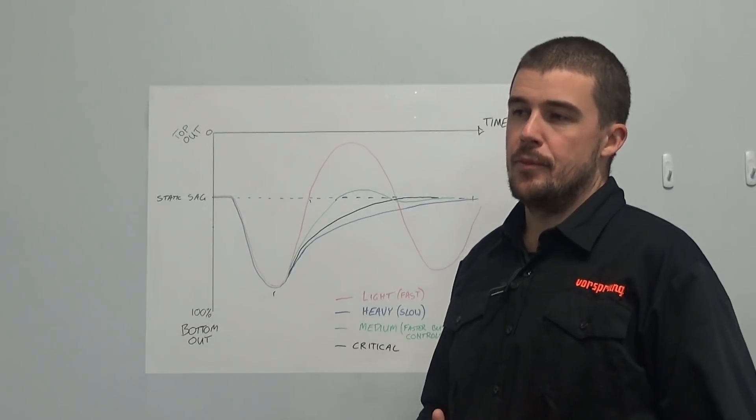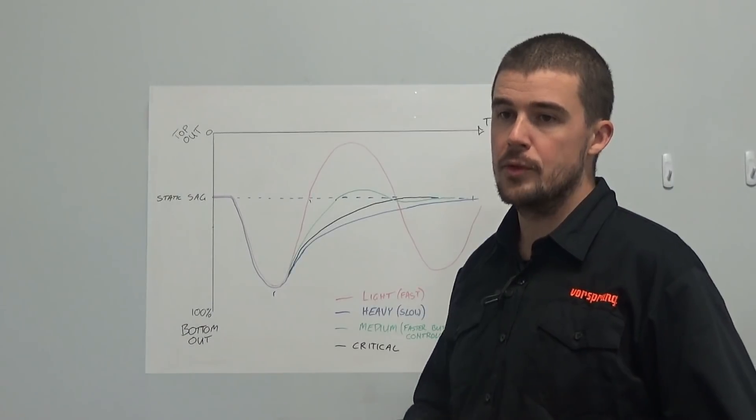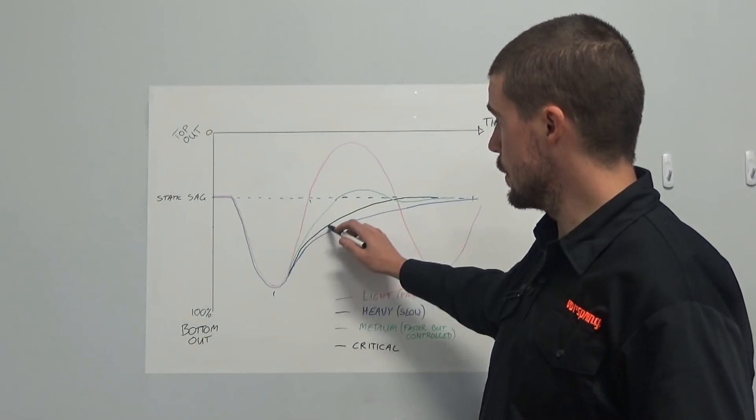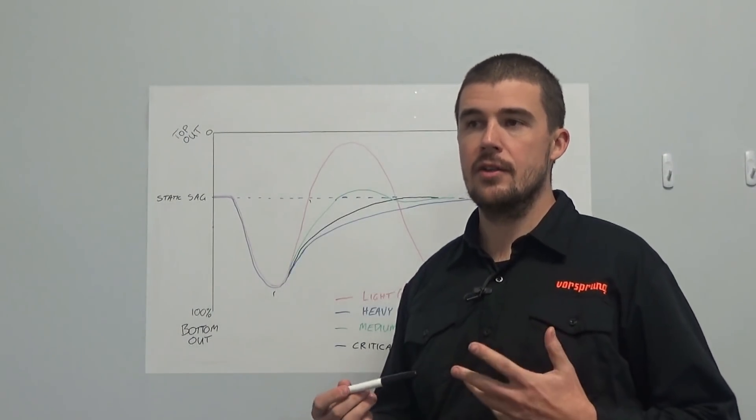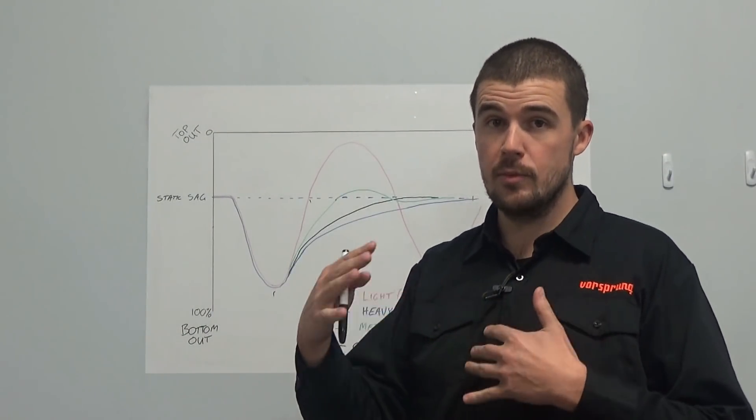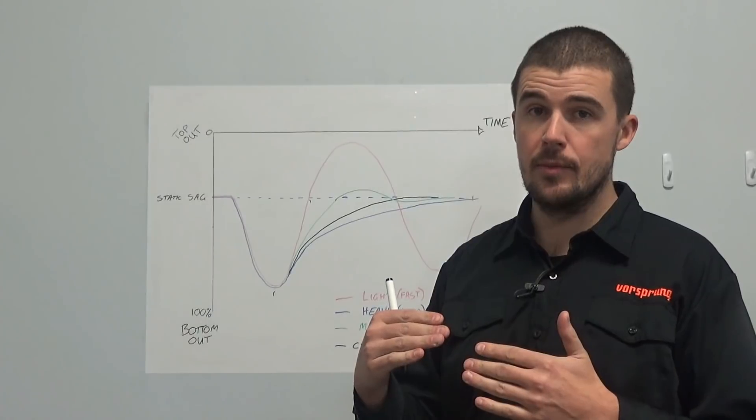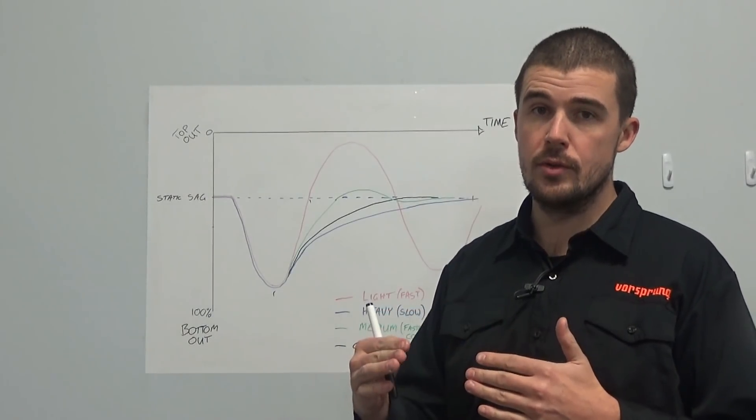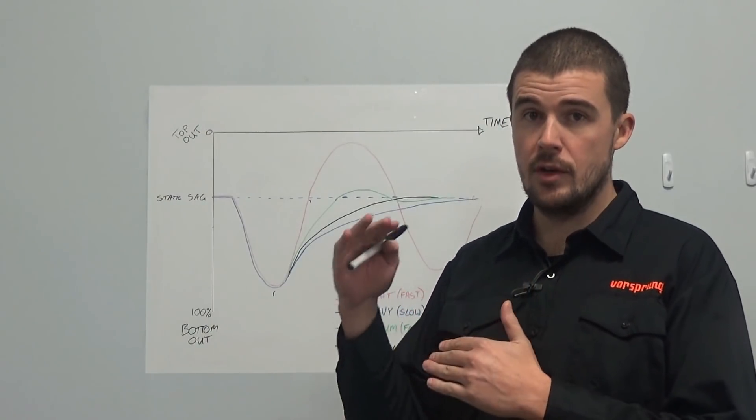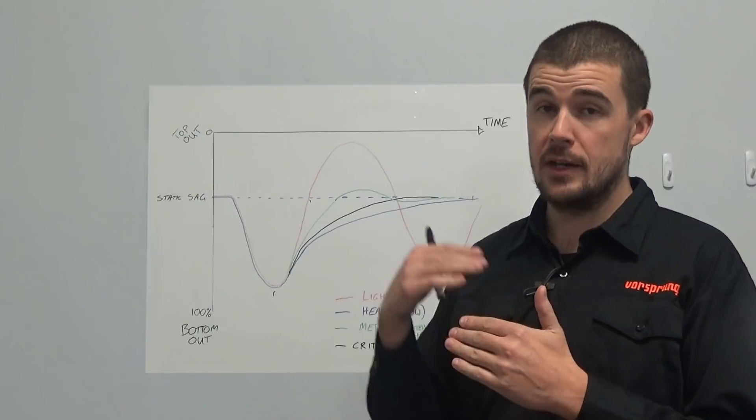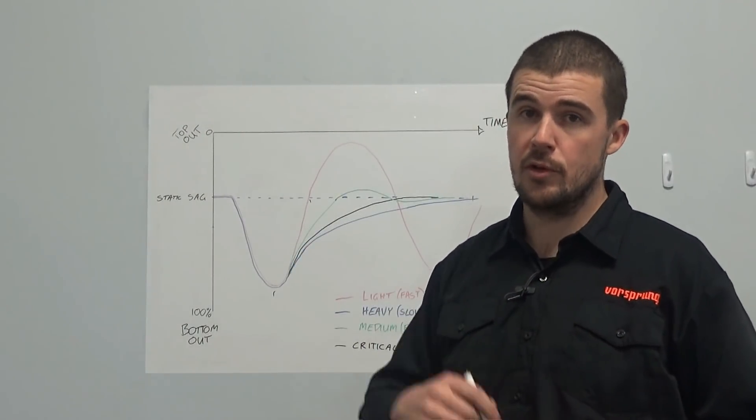From a mathematical standpoint, what is often considered an idealized damping form is what is referred to as critical damping. Critical damping is the amount of damping that allows the suspension or the spring mass damper system to return to its static point with no overshoot, but at the highest possible rate. So we're looking to get from full compression or whatever displacement it's put to back to its typical resting point as quickly as possible without overshooting.